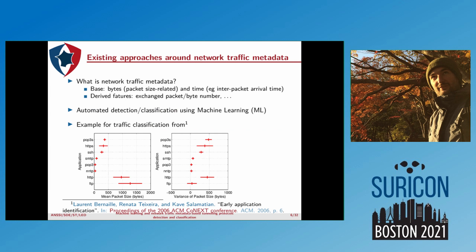Now we are going to take a quick look at existing approaches around network traffic metadata. Network traffic metadata is basically two types of data — bytes, usually with packet size and time — that you can sometimes use with inter-packet arrival time. From these, you can derive features such as total number of packets or byte exchange.